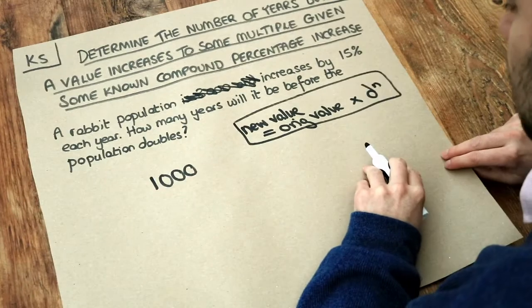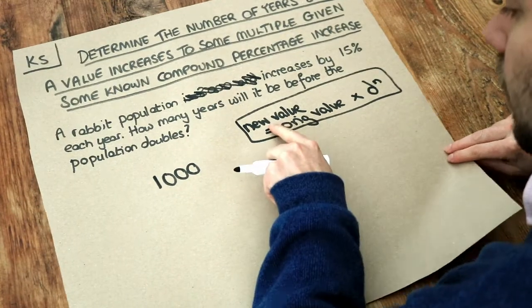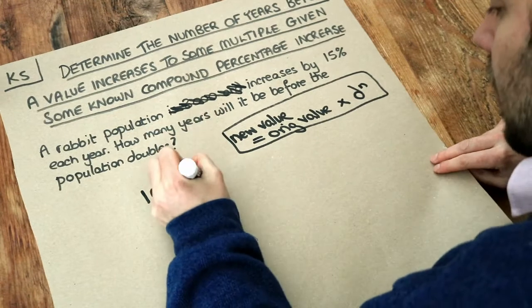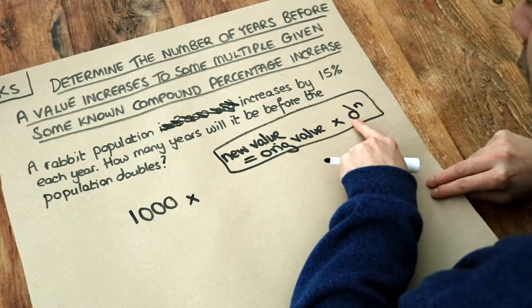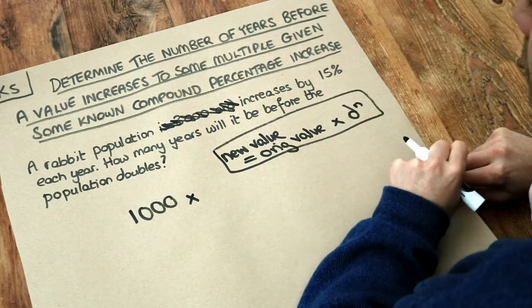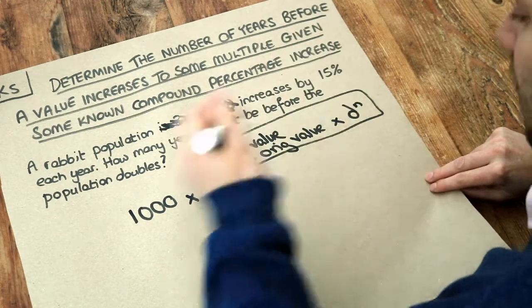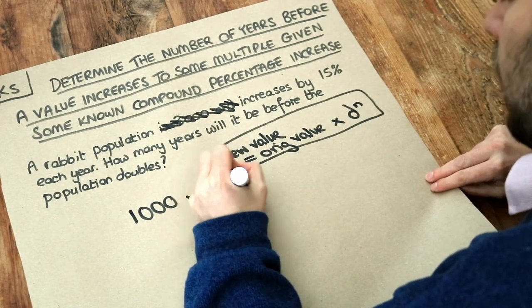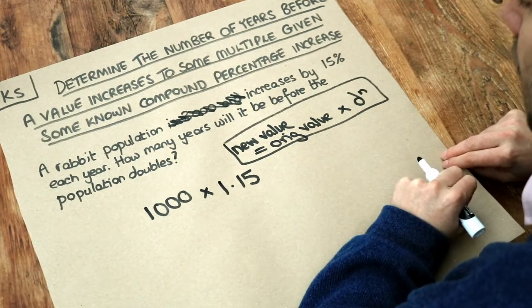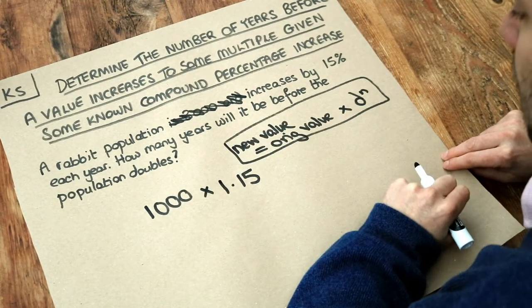So let's fill in these values into it. The new value, well the original value, let's say there's 1,000 rabbits, multiplied by the decimal multiplier. We want to increase by 15%. And in previous videos we could see that we could multiply by 1.15 to represent a 15% increase. If you don't understand that, then look at my other videos first.